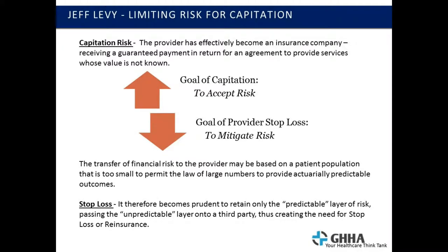Now that you've decided to take on these contracts, whether they're bundled payment or capitation, effectively you as the provider or the facility have now become the insurance company, because the risk of loss has been transferred to you. If your expenses exceed your revenue, that risk of loss is yours. You can't go back to some other payor to recapture that revenue. The fee-for-service world will allow you to do that, but the world of capitation and these alternative risk-sharing programs do not.